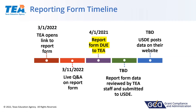We're going to open this report form March 1st. We'll give you about 10 days and then do a live Q&A session on March 11th. The report will be due back to TEA on April 1st. At some point after that, we will have to report all your data to USDE — we don't know that date yet, but they expect it will be early May. In that window between April 1st and early May, we'll be doing data checks, data validations, cleaning up data, and getting people who didn't submit on time to get their data submitted — all within about one month.